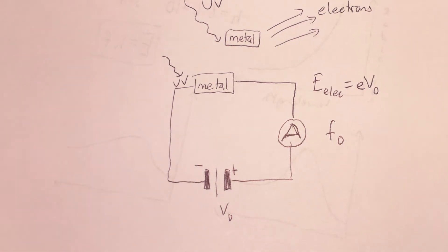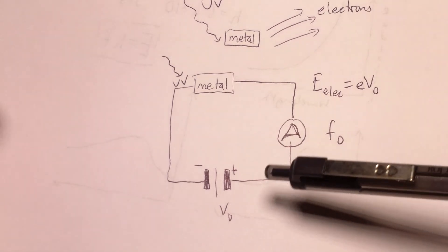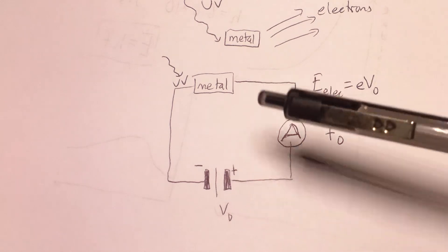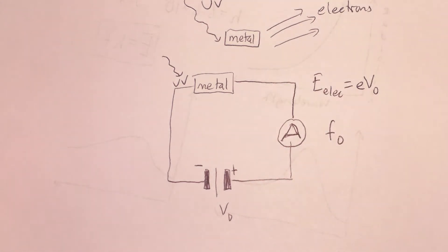And the problem, which violates the Maxwellian theory, is that if you do the experiments, the stopping voltage is independent of the intensity of the light used. So the amount of energy it takes to stop the light is independent of the intensity of the light. And this doesn't work in our traditional framework.